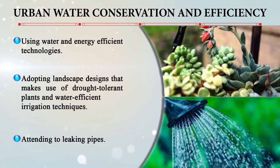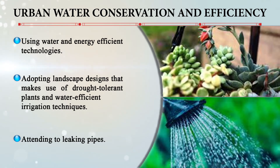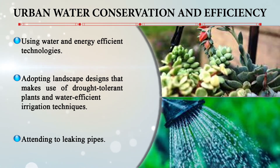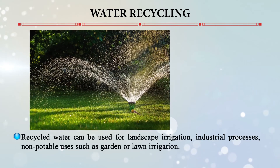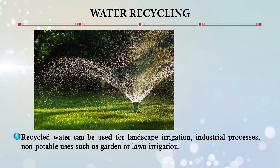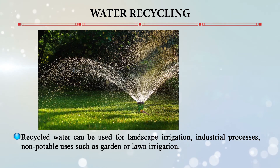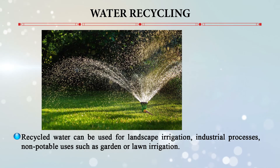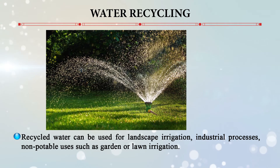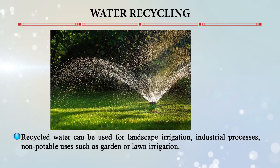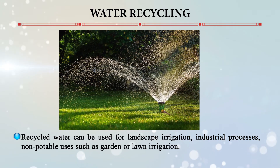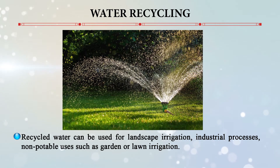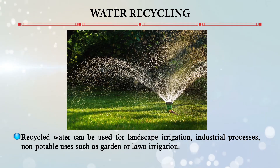We should also attend to leaking pipes. Information systems like GIS and smart sensor techniques can aid in the conservation and efficiency of water and energy resources. Water recycling is another strategy — recycled water can be used for landscape irrigation, domestic purposes, industrial processes, cooling mechanisms, and non-potable uses such as garden or lawn irrigation. At home, water used for washing vegetables or pulses can be recycled and reused for home gardens and other purposes.